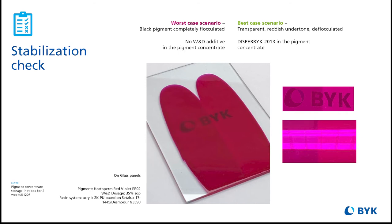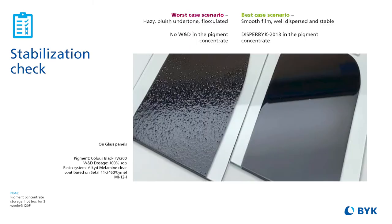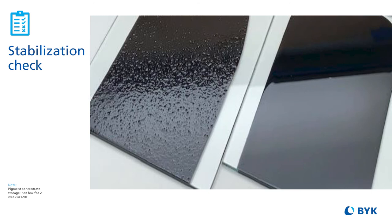When we did the same test using a drawdown on a clear glass panel for a hotbox storage sample of Hostaperm Red Violet, we can see the color difference very clearly. We can also see that the color transparencies are different; if we place the glass panel over a dark base, the paint on the right with the dispersant is deflocculated, stable, and has great transparency compared to the one on the left without additive. A similar drawdown on a glass panel from a hotbox storage sample of a carbon black dispersion shows a comparable result — the sample with Disperbyk-2013 was deflocculated and stable over time with no defects, whereas the sample on the left is unstable and shows many defects.